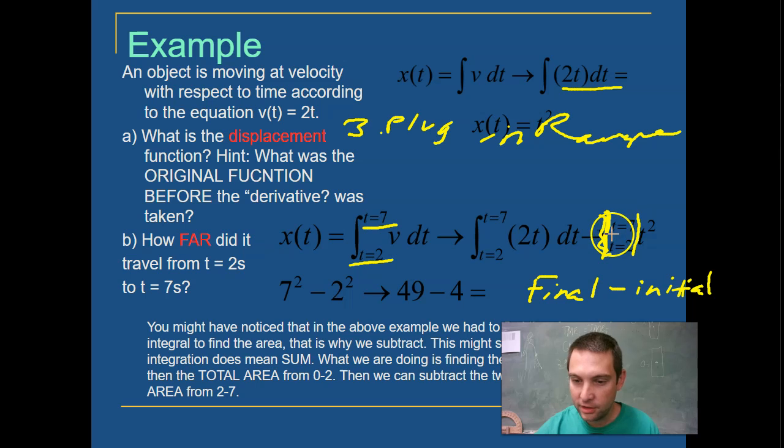All right, so our final is the upper boundary. So 7, 7 squared minus the initial, which is 2 squared. 49 minus 4 gives us 45.